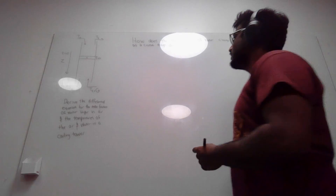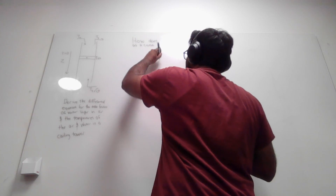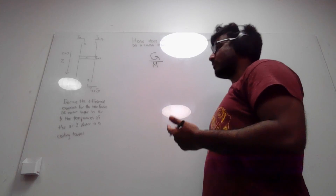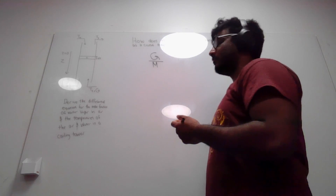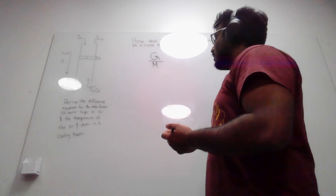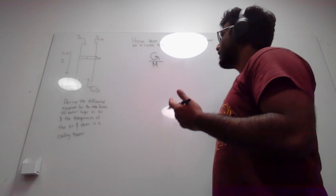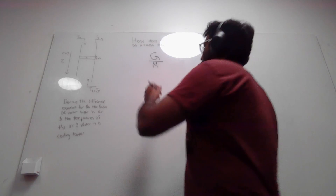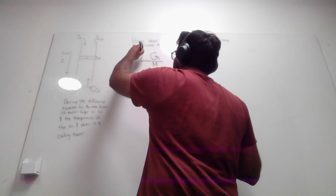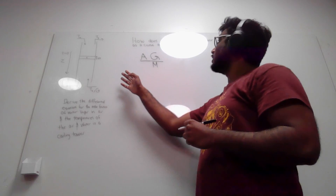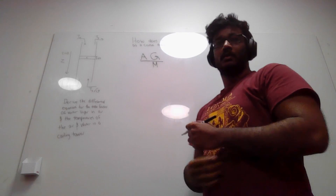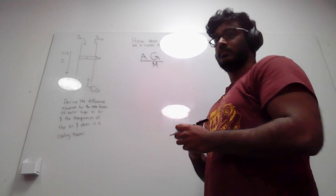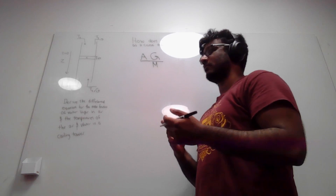We start by taking the gas flow rate divided by the molecular weight. The gas flow rate is in kilograms per meter squared, divided by the molecular weight in kilograms per mole, giving us moles per meter squared. Multiplying by the cross-sectional area gives us the number of moles of gas flowing through the cooling tower per second.